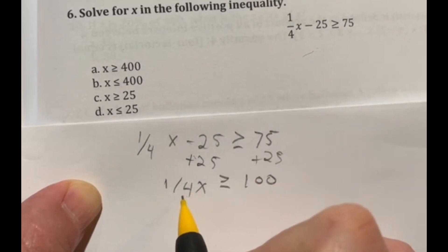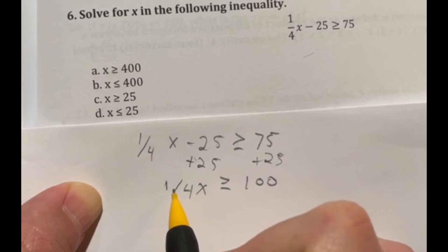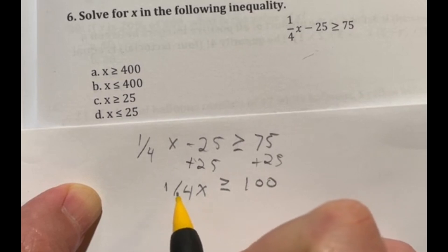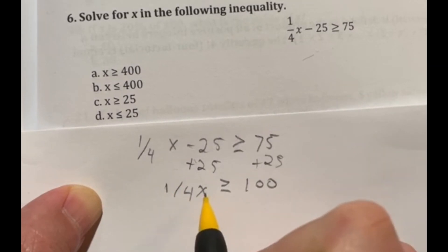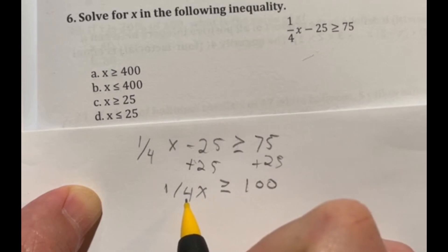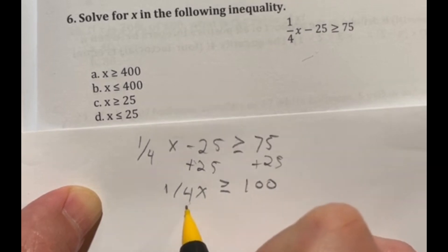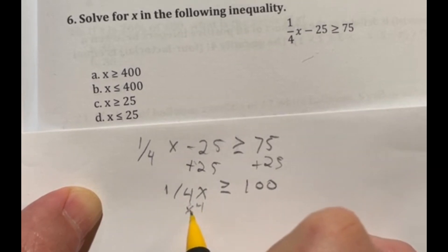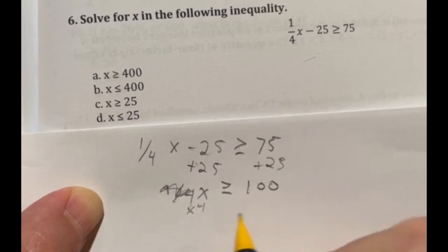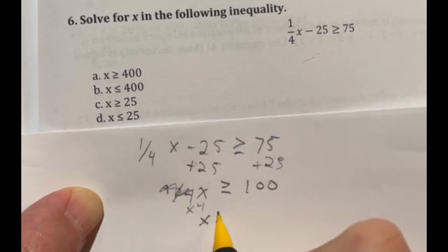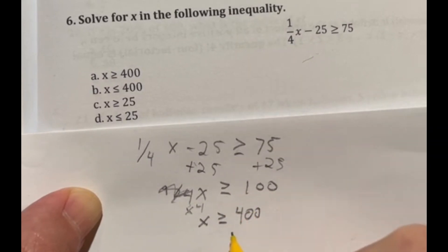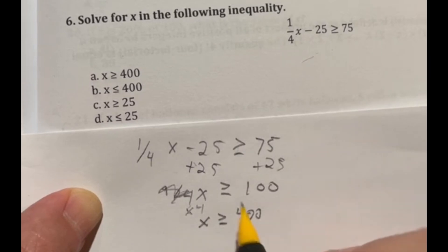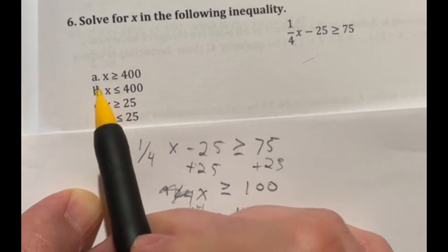Now, in this case, we're looking at one over four. Now remember, this is the same thing as essentially dividing by four. So if you have one over a number, that means you're essentially just dividing, you're multiplying by that number. So in this case, dividing by four, what's the opposite, we're going to multiply both sides by four. So if I'm multiplying both sides by four, that cancels it out over here. 100 times four is going to give us x is greater than or equal to 400. So this is our final answer here. So it looks like we're choosing option A.